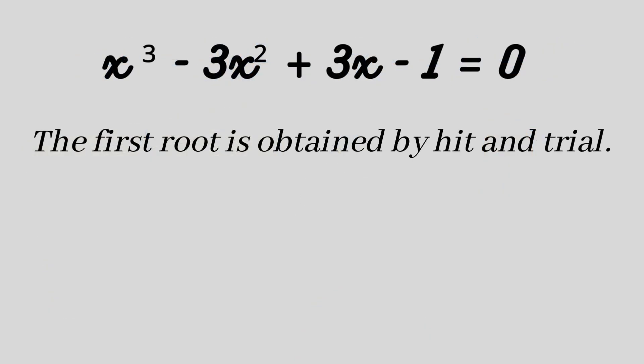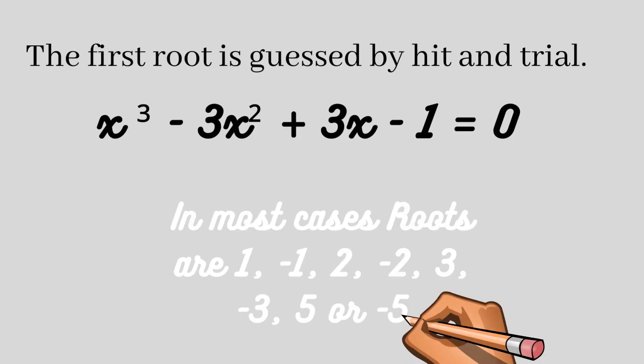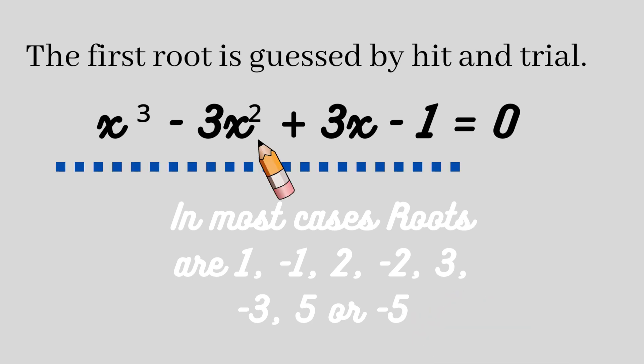The first root is obtained by the method of hidden trial. Most of the time the roots are small values like 1, -1, 2, -2, 3, -3, 5, -5, and so on. You need to put such small values into the left-hand side of the equation in place of x and check if you get zero as the result.